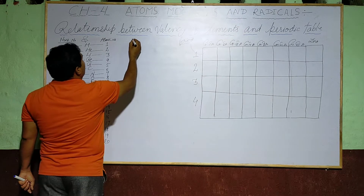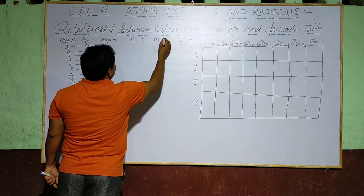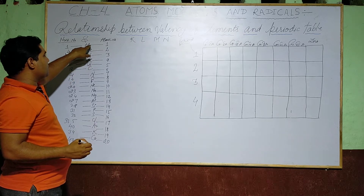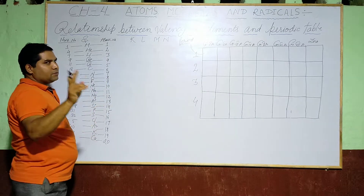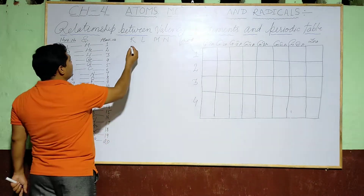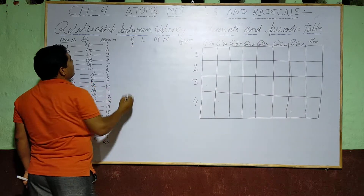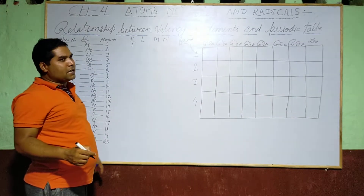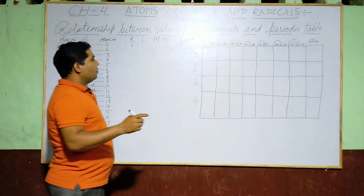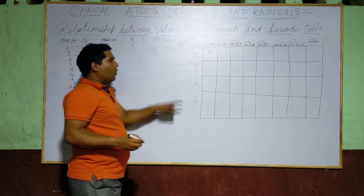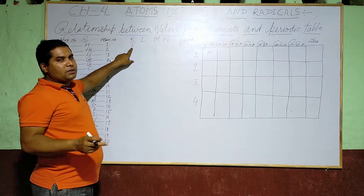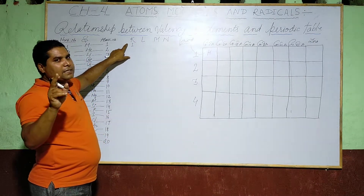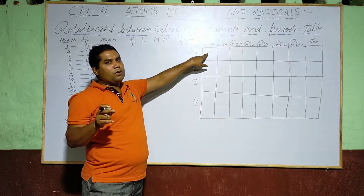The shells are K, L, M, N. For Hydrogen, the atomic number is 1, so the electronic configuration requires only one shell to hold the single electron. Therefore, Hydrogen is placed in Period 1 and Group 1A — because it has only one valence electron and only one shell is required.